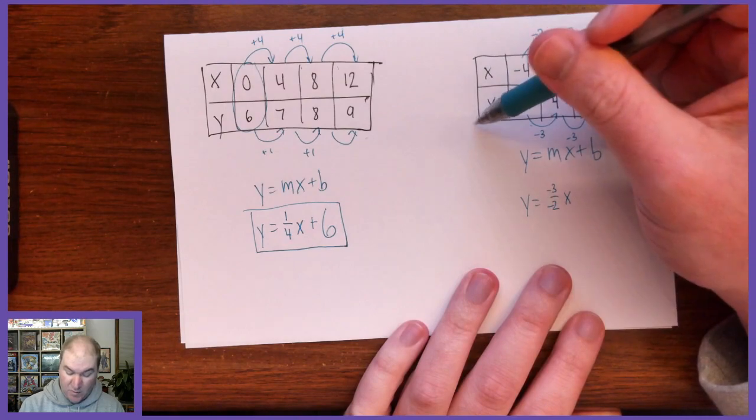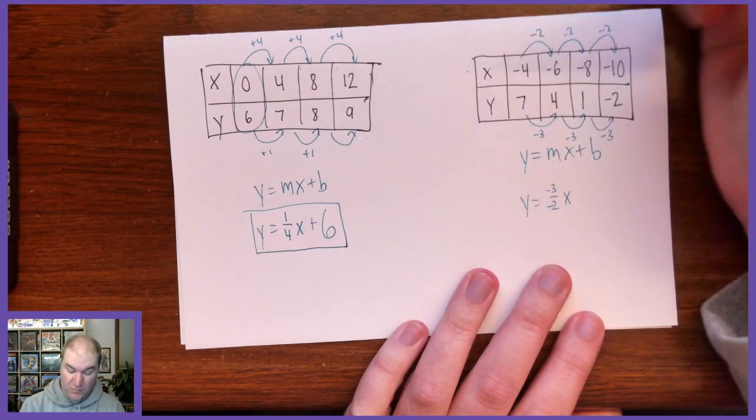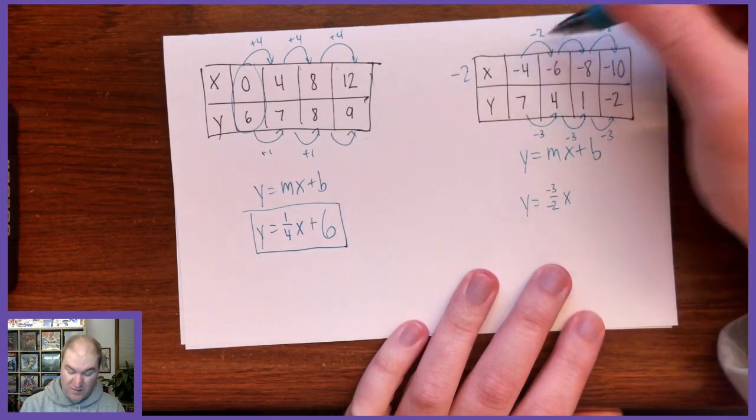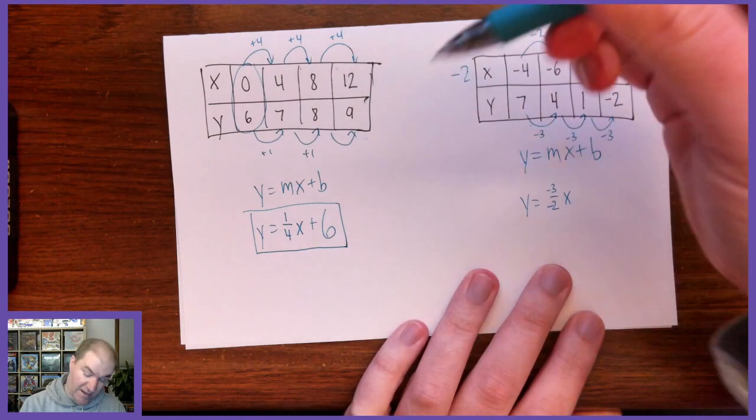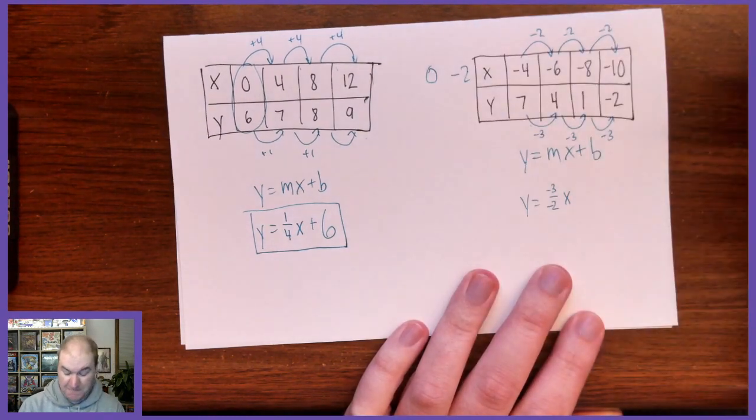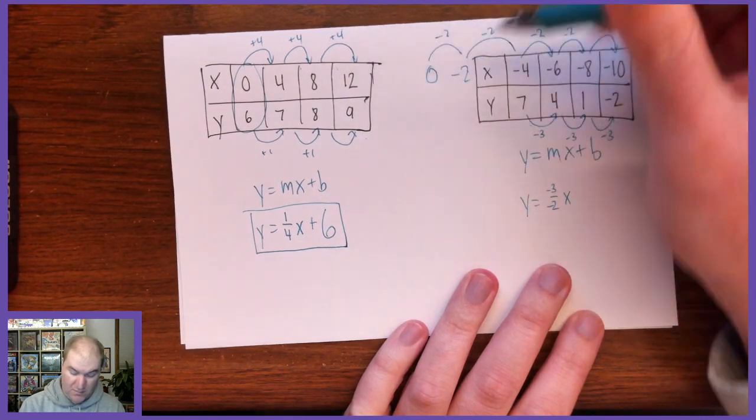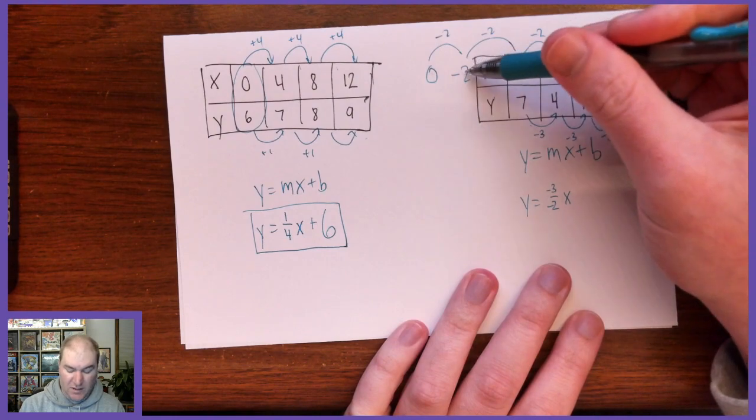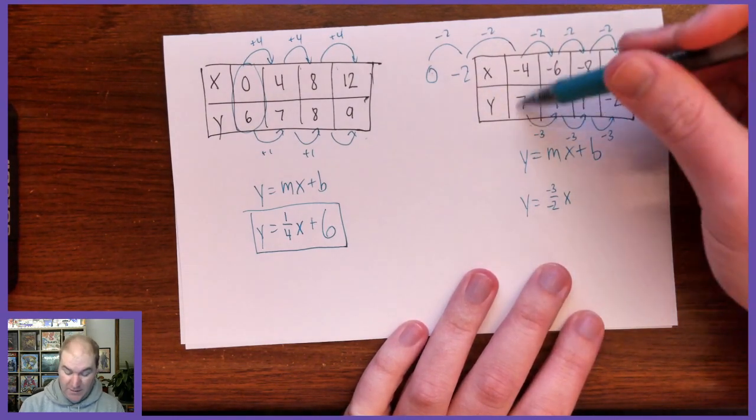But we don't know b. We need to add some rows to this column here. If we go backwards 2, like the rest of the table is going, we'll get to negative 2. We need to go backwards 2 more to get to 0. So that would be 0 minus 2 is negative 2. Negative 2 minus 2 is negative 4.